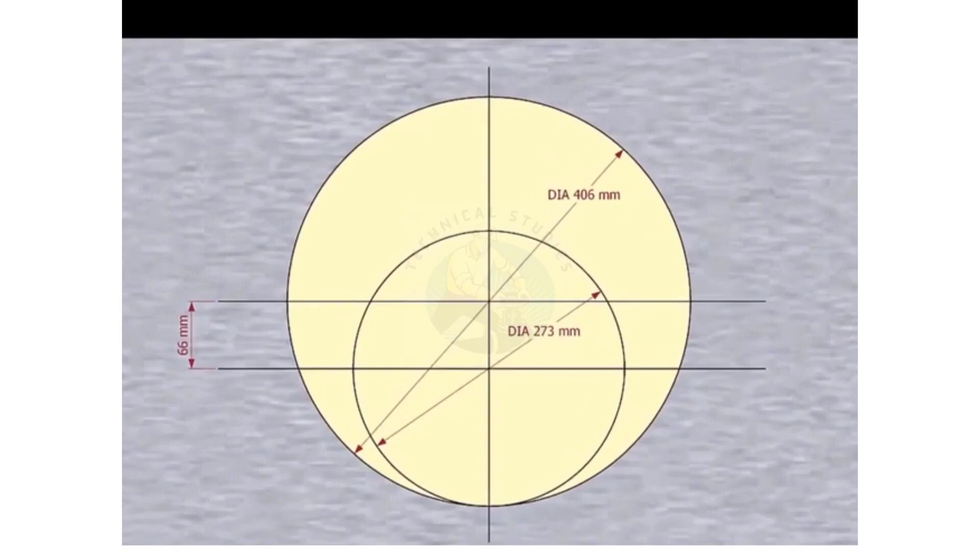Please remember that our reducer size is 16 inch into 10 inch. The large side OD is 406 millimeters, the small side OD is 273 millimeters, and the eccentricity is 66 millimeters.